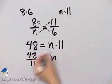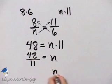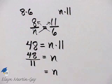n is 48 over 11. Now this is simplified, but it is an improper fraction. So if you'd like, you can write it as a mixed number.